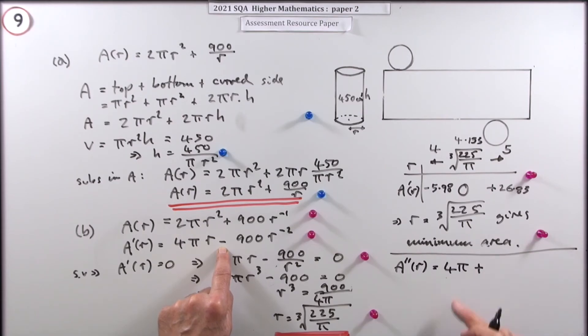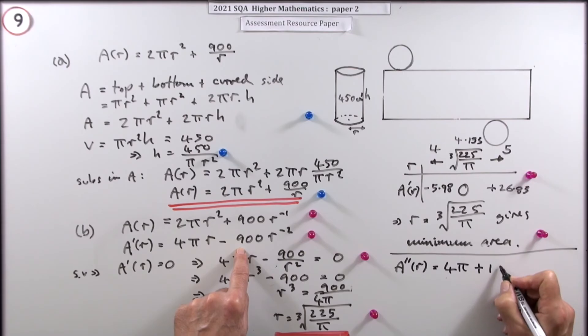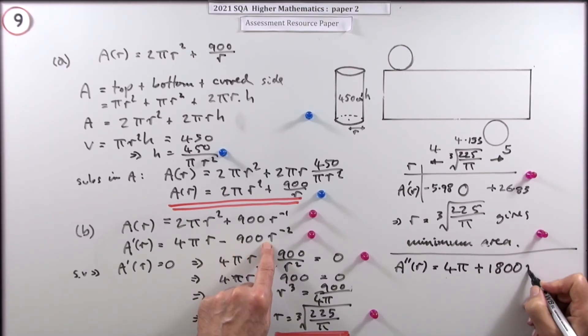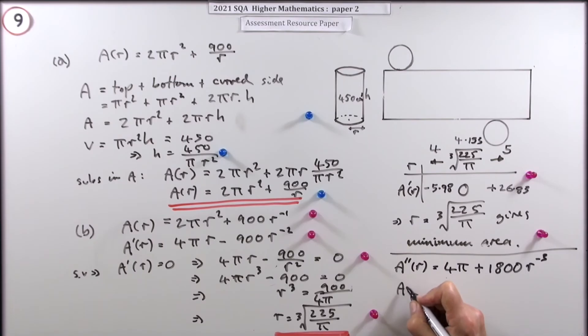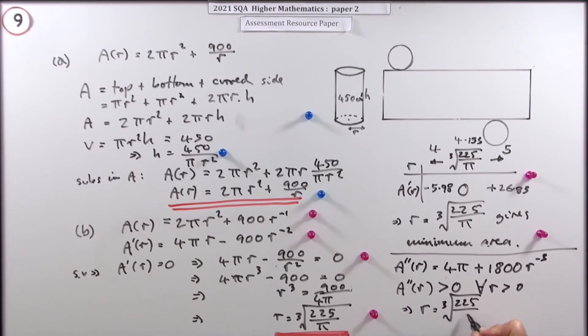That tells you the answer straight away. This answer always has to be more than four pi. It always has to be positive. But I'll carry on anyway. Multiply by the power, so that'll be 1800, 1800 r to the negative three over r cubed, in other words. Now it doesn't matter what r is. In this case, the second derivative is greater than zero for all r greater than zero. So it doesn't matter what you put in. It's always greater than zero, which means that any value of r, so in this case specifically, r equals 225 upon pi gives a minimum area.